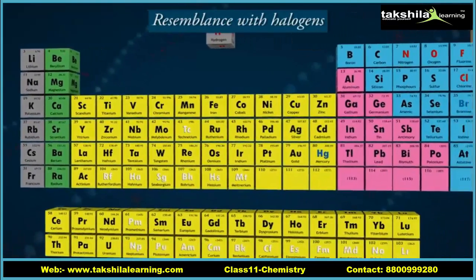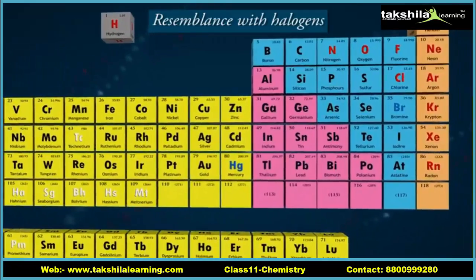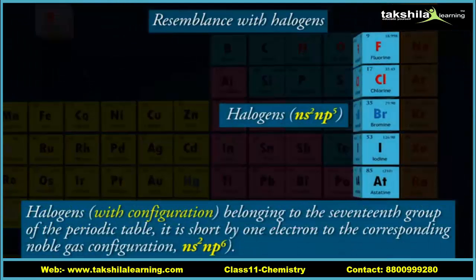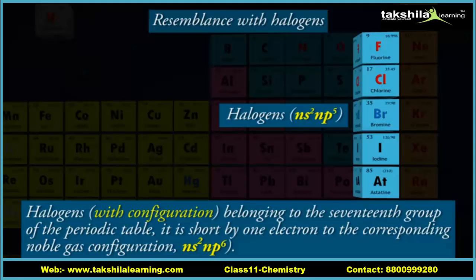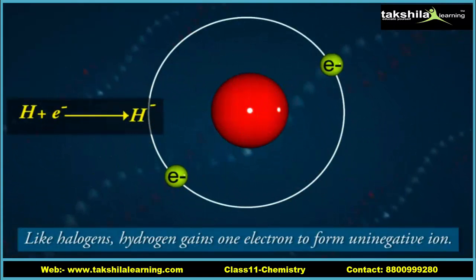Resemblance with halogens: like halogens with ns²np⁵ configuration belonging to the 17th group of the periodic table, hydrogen is short by one electron to the corresponding noble gas configuration (ns²np⁶). Like halogens, hydrogen gains one electron to form a uninegative ion (H⁻).